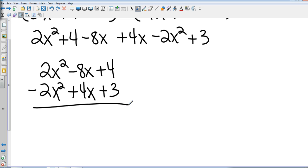And so now you'll see something interesting. 2x squared minus 2x squared is going to cancel. Negative 8x plus 4x is going to give me negative 4x. And then 4 plus 3 is going to give me 7. So it's just negative 4x plus 7.